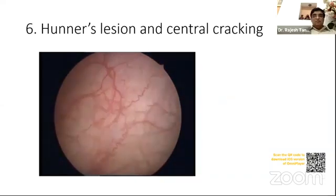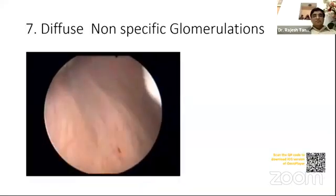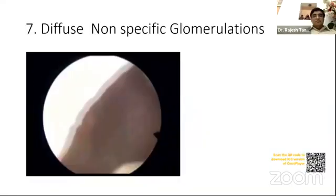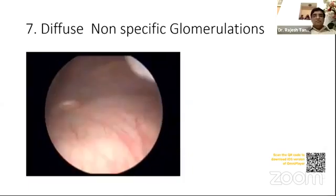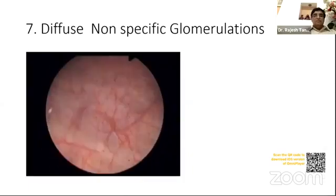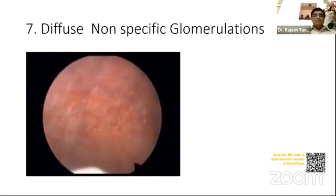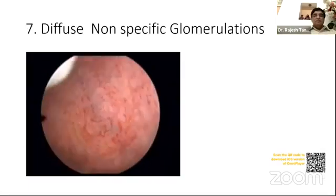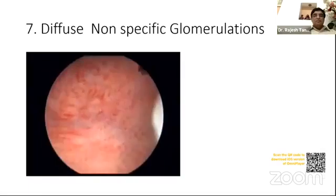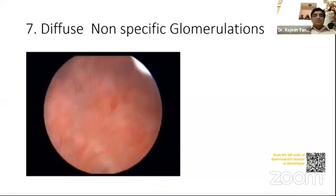Note the central cracking of the lesion upon hydrodistension; the rest of the bladder does not show any cracking. This case depicts non-specific glomerulations which are diffusely occupying the distensible part of the bladder. Note that this is a non-specific finding and is not diagnostic of BPS/IC.